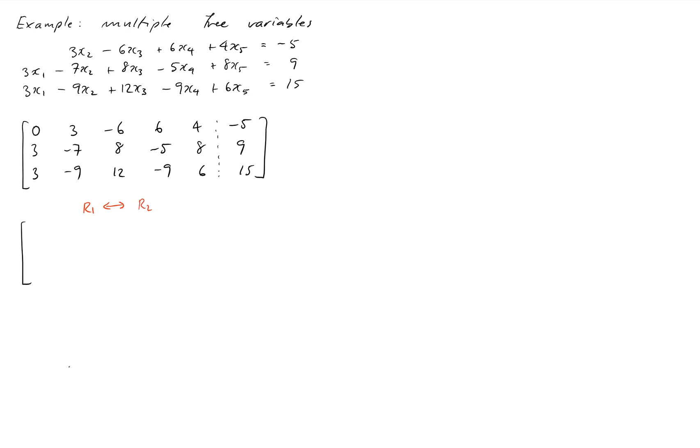So our new matrix is going to be 3, negative 7, 8, negative 5, 8, 9. Second row: 0, 3, negative 6, 6, 4, negative 5, and the third row will remain the same.